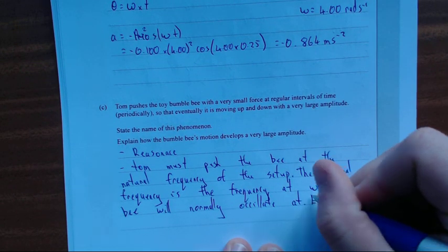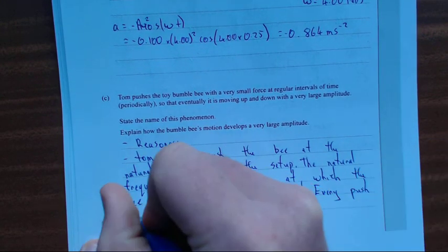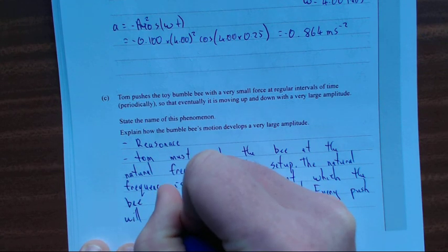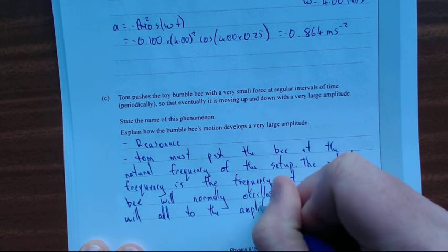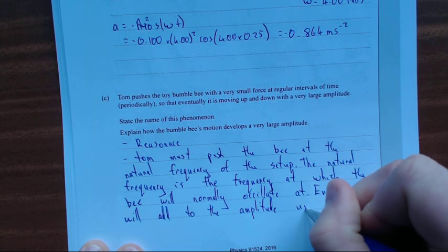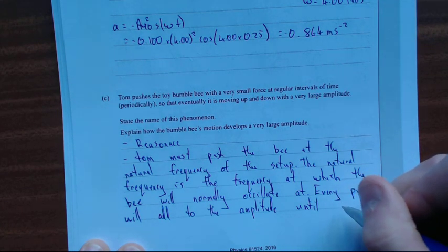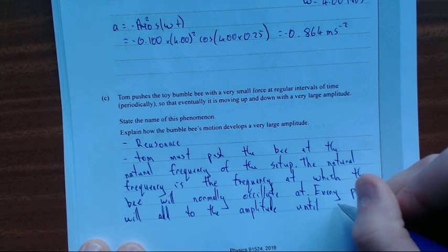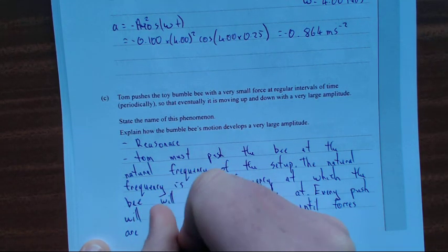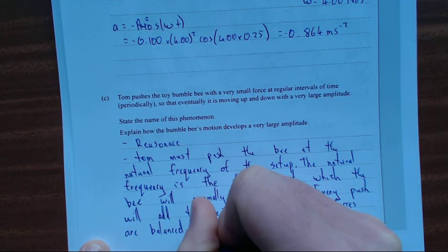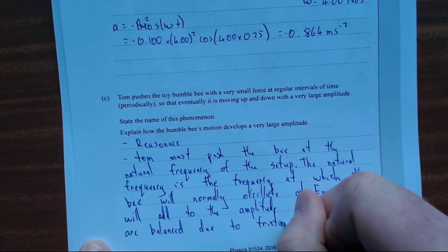What is the natural frequency? I'll probably write that as well. The natural frequency is the frequency at which it normally oscillates, the frequency which the bee will oscillate at. Explain how - so have I answered it? Resonance. Tom must push the bee at the natural frequency. Every push will add to the amplitude until forces balance due to friction and heat losses.